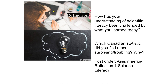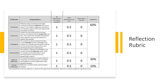Think about how your understanding of science literacy has been challenged by what you've learned today — both from the Canadian science literacy facts and from class discussions. Which Canadian statistic did you find most troubling or surprising and why? Finally, here is the rubric upon which you'll be evaluated — it is out of six marks. I want you to challenge your thinking, have depth of reflection, and think about your reflection in the context of the learning outcomes and objectives within this course. Thanks for listening, folks, and I will see you in class.